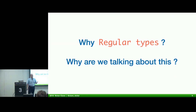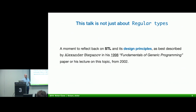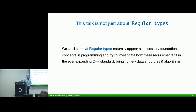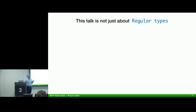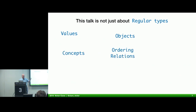So why regular types? Why are we talking about this? Well, it's a moment to reflect back on STL and its design principles. As best stated by Alexander Stepanov in his seminal paper from more than 20 years ago on fundamentals of generic programming, we shall see that regular types naturally appear as necessary foundational blocks for building programs. We'll try to investigate the requirements that STL imposes on our types and its types in order for algorithms to work properly. But this talk is not just about regular types — it's about values, objects, concepts as defined by the next standard.